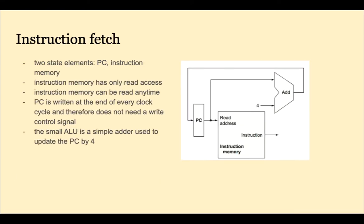Next, we take a more detailed look at the data path one section at a time. First, the instruction is fetched. Here we see the two state elements: the PC and the instruction memory. The PC is written at the end of every clock cycle and therefore doesn't need a write control signal. The PC points to the next instruction to be executed, and the small ALU is a simple adder used to update the PC by four.